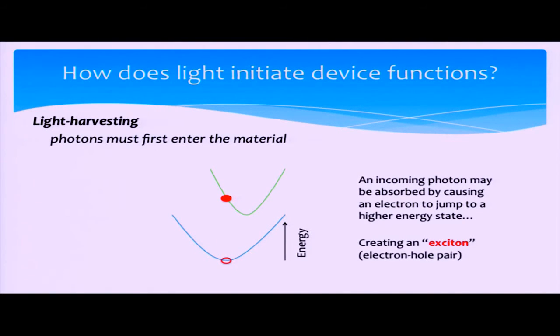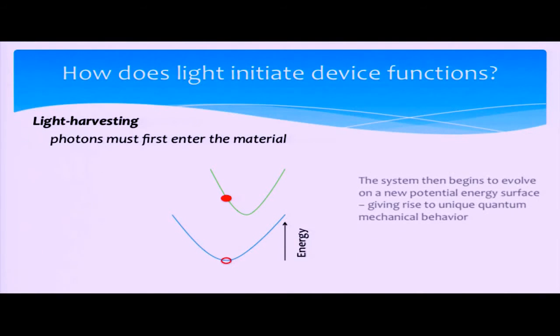An incoming photon has the probability of being absorbed by kicking an electron up from the ground to excited state. This forms the creation of what's known as an electron-hole pair, or exciton. Once the system's on its excited state, it now propagates on a completely different potential energy surface, giving rise to many unique quantum mechanical properties.